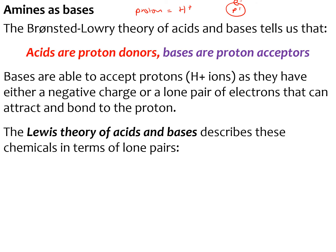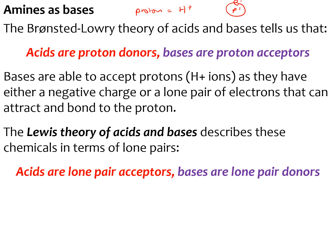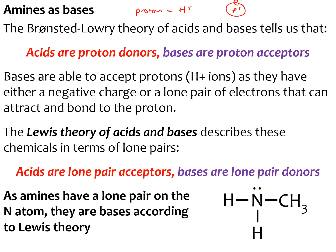The Lewis theory of acids and bases describes chemicals in terms of lone pairs instead of protons. Something that's an acid according to Bronsted-Lowry is still an acid according to Lewis theory and the same for bases — it's just the descriptor that differs. According to Lewis, acids are lone pair acceptors and bases are lone pair donors. As amines have a lone pair on the nitrogen, they are bases according to Lewis theory. They are weak bases because they only have a lone pair.